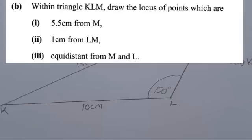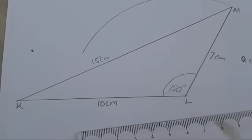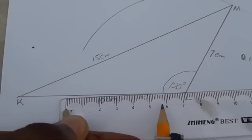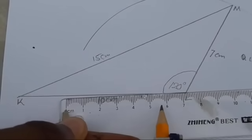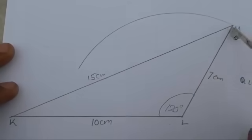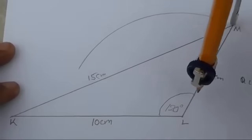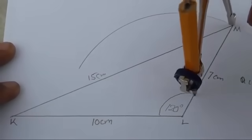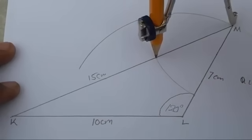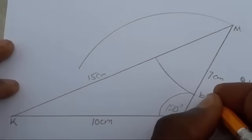Part B says: within triangle KLM, draw the locus of points which are 5.5 centimeters from M. Get your ruler and collect measurements of 5.5 centimeters from 0. Put your compass point at M and, because they say within triangle KLM, make an arc just within the triangle — not outside, but within. Label this arc B(i).